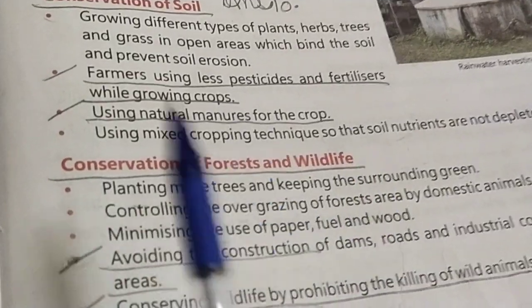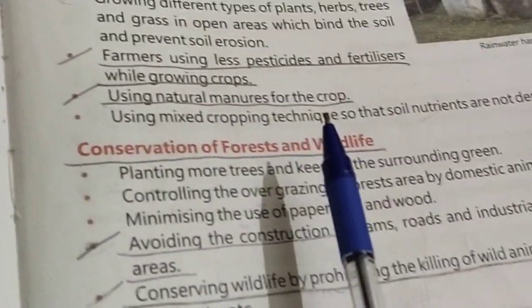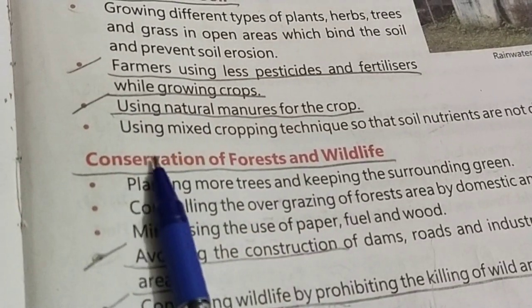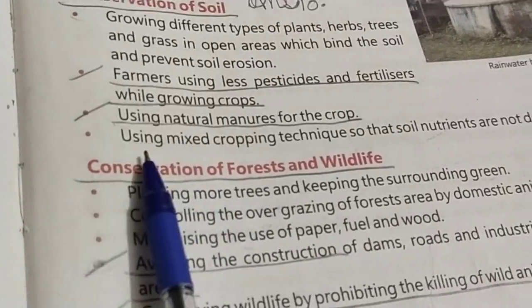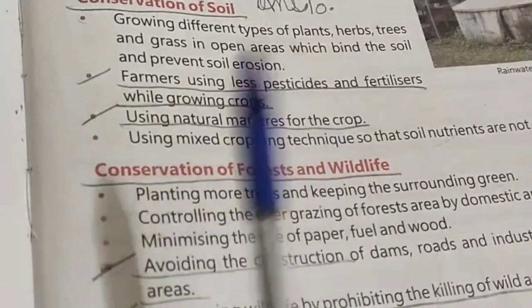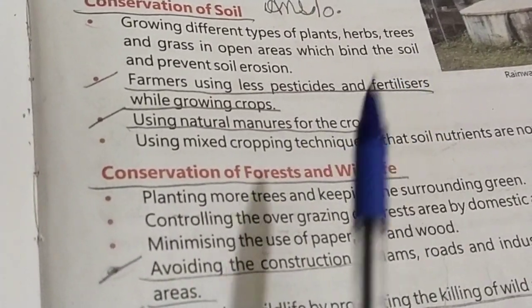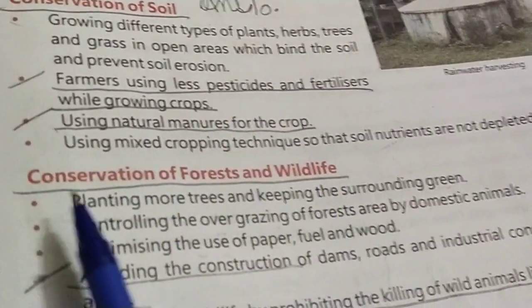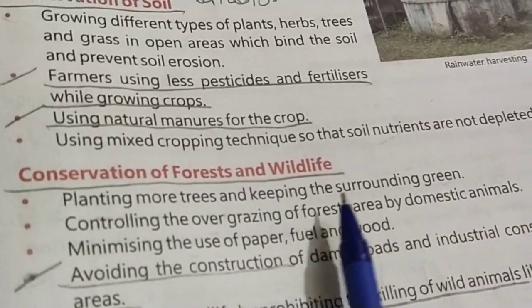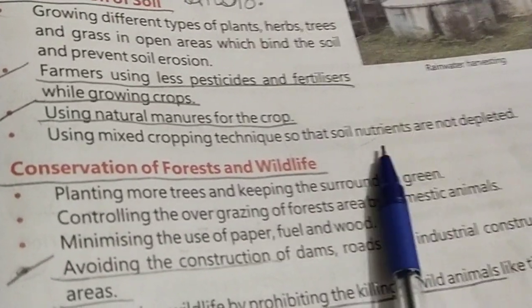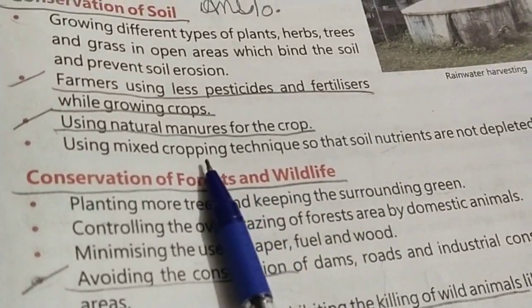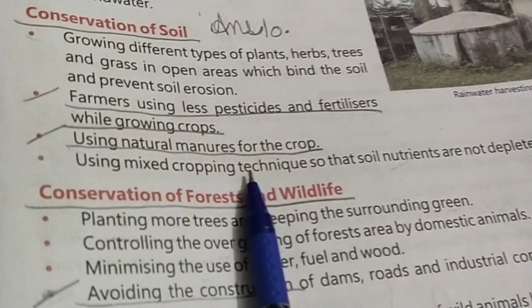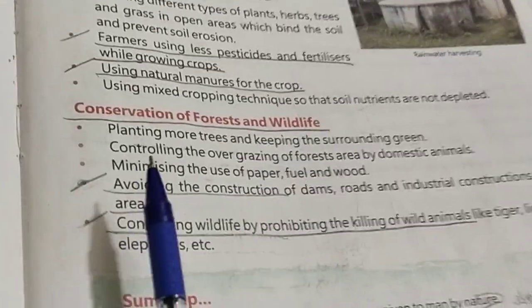When we grow the same kind of crop repeatedly - like only wheat or only rice - the soil becomes infertile due to lack of nutrients. To maintain soil nutrients, we should use mixed cropping techniques so that the soil can maintain its nutrient content.